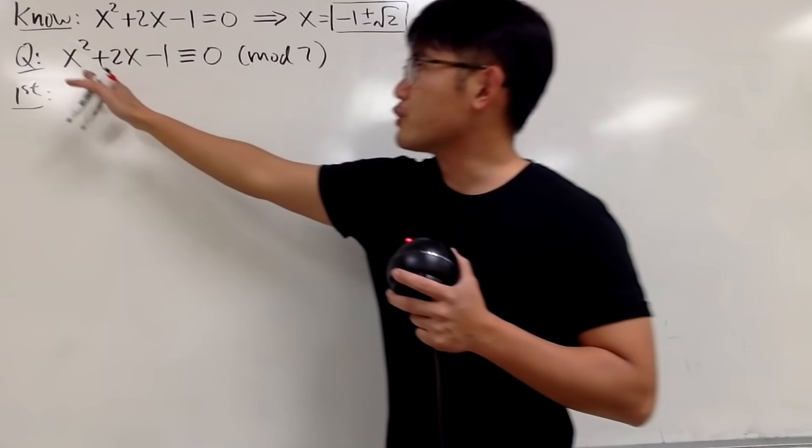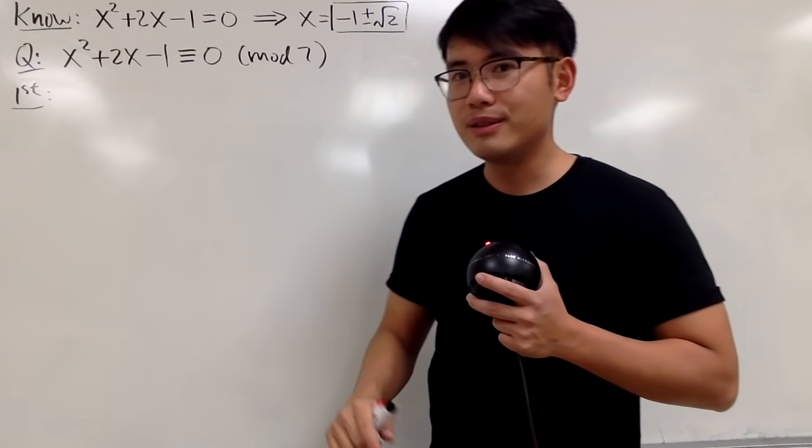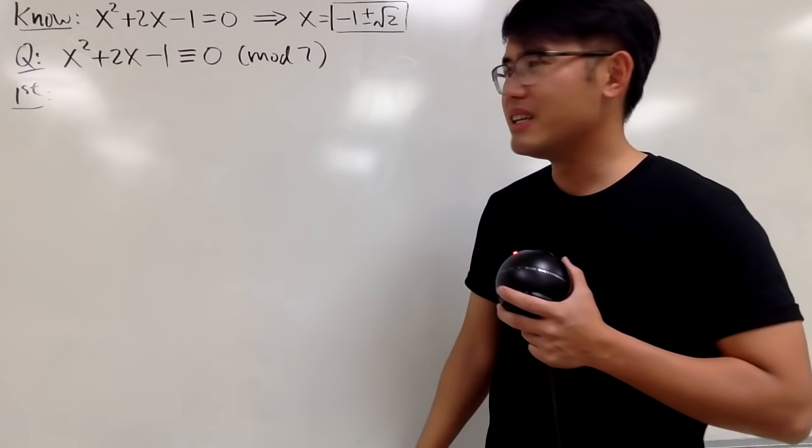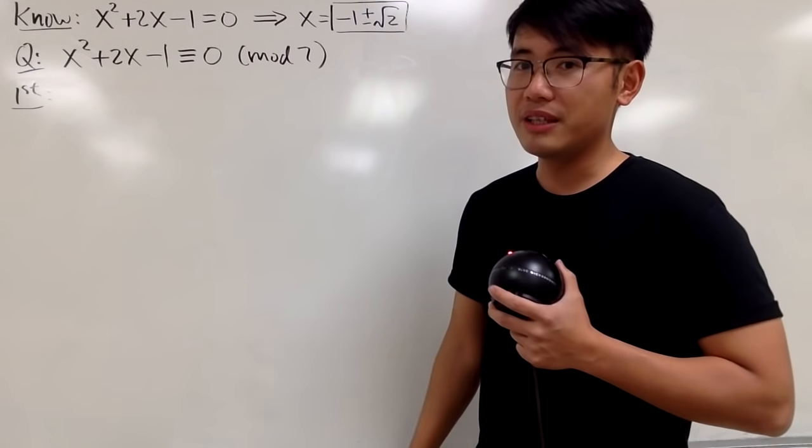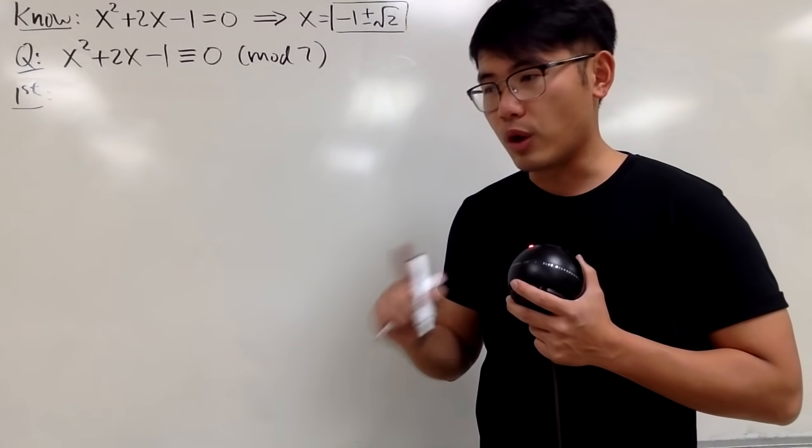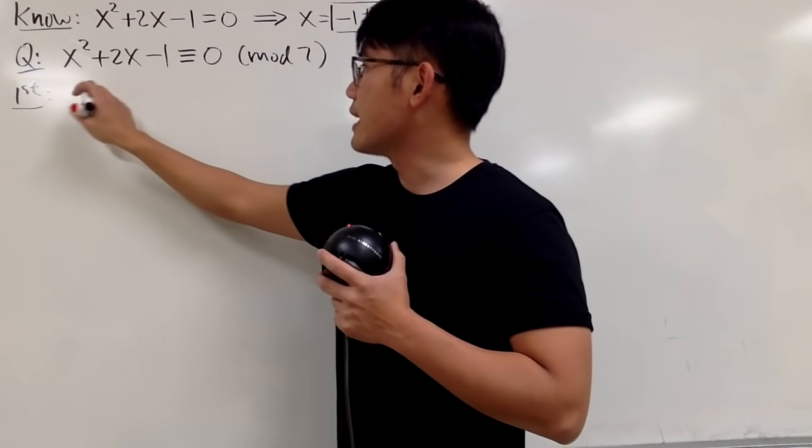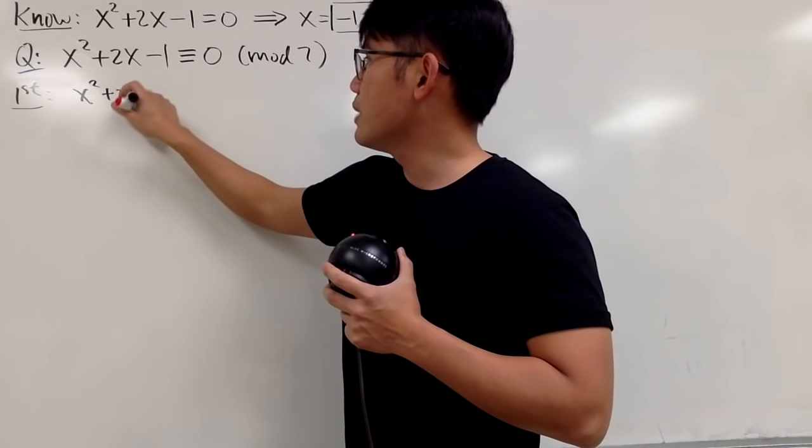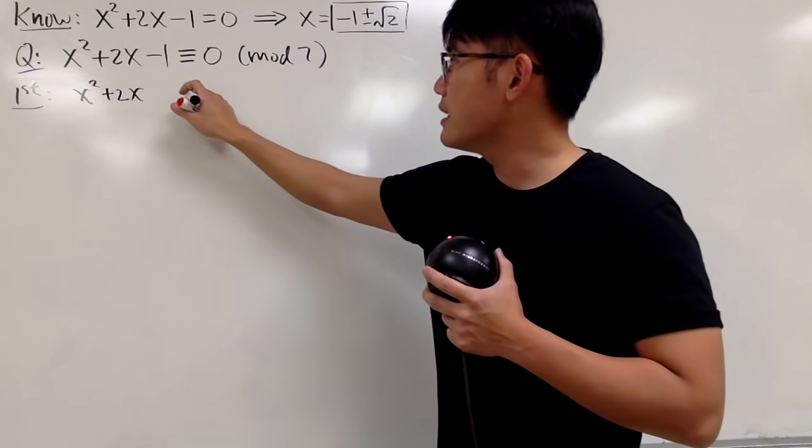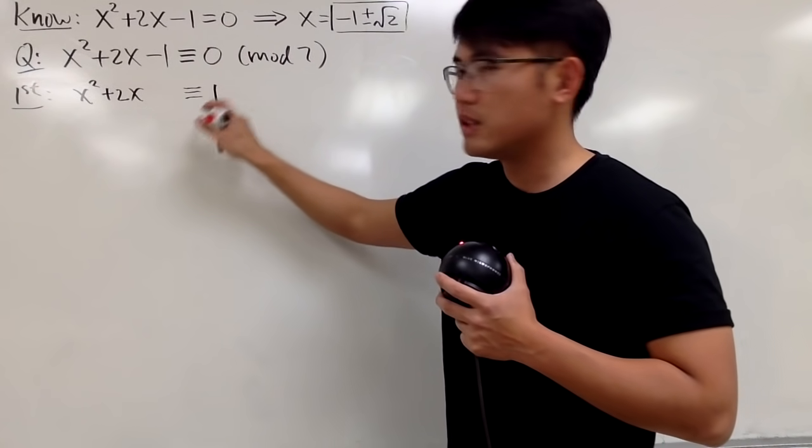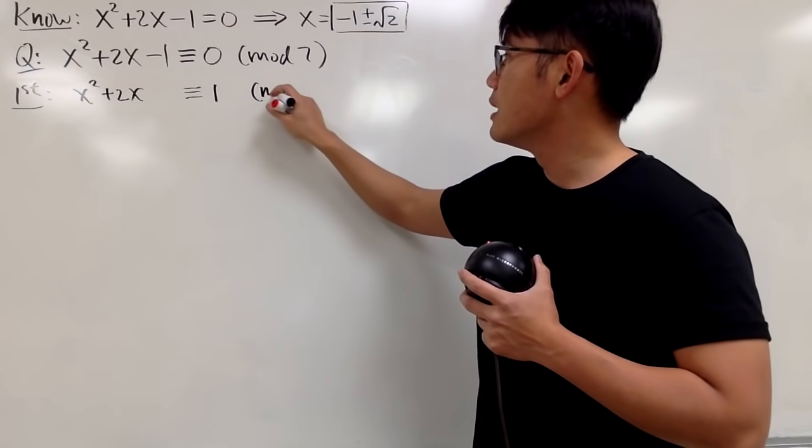First, well, unfortunately we cannot factor this yet, and you'll see why later. So I will just deal with this as how it is. I will not use the quadratic formula, I will complete the square. So let me just add one on both sides, and I get x squared plus 2x, and I will leave a space, and this is congruent to positive 1 mod 7.